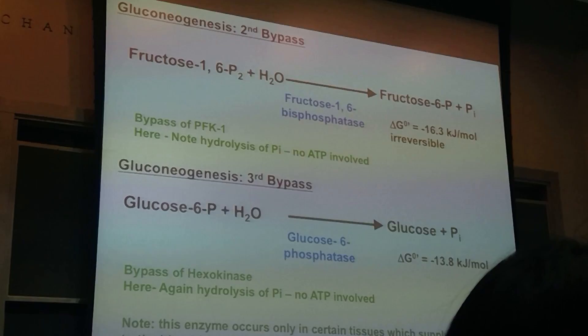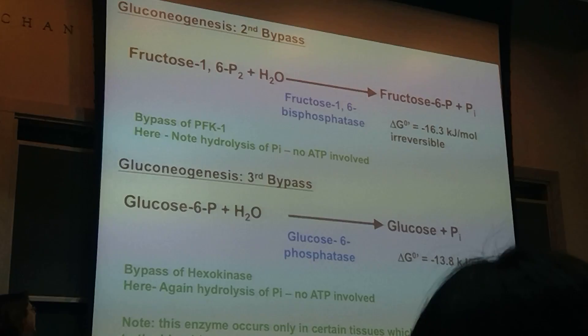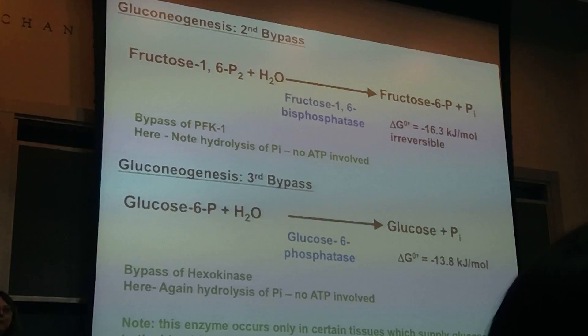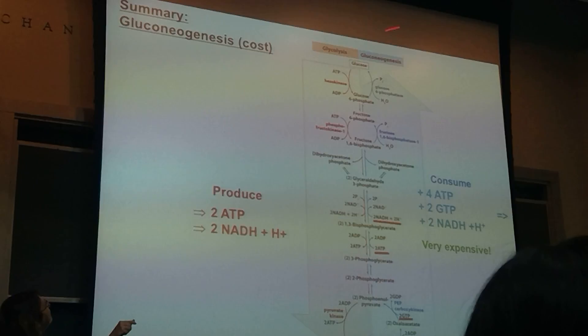You might wonder how it works — because we know that we don't want glucose-6-phosphate going to glucose when we're actually in glycolysis converting glucose to glucose-6-phosphate. That would just be a circle. So what happens is they're under differential control, and they actually only have these enzymes and this function in certain cells and certain tissues. These happen in different cells under different conditions.